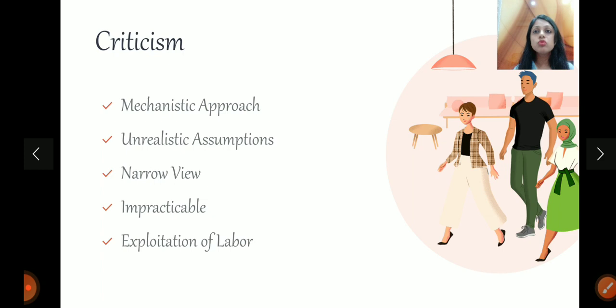So, these kind of things were certain criticisms of Taylor's theory, but considering this theory came in 1900s, according to that time, this was one of a breakthrough theory. Some principles, cooperation, not individualism, harmony, not discord, scientific task planning, these principles are still followed today. That is why this is one of the first classical and empirical theories. And this is the theory given by Taylor.